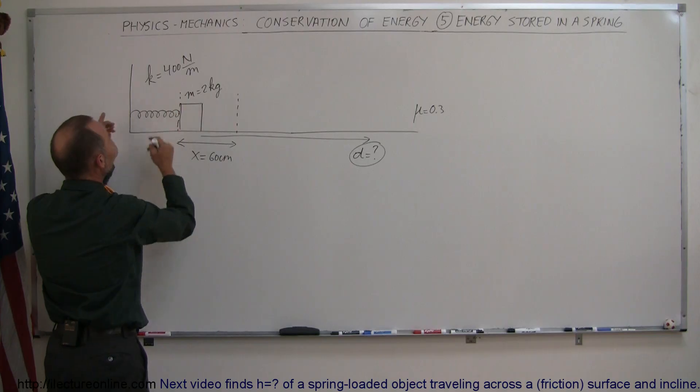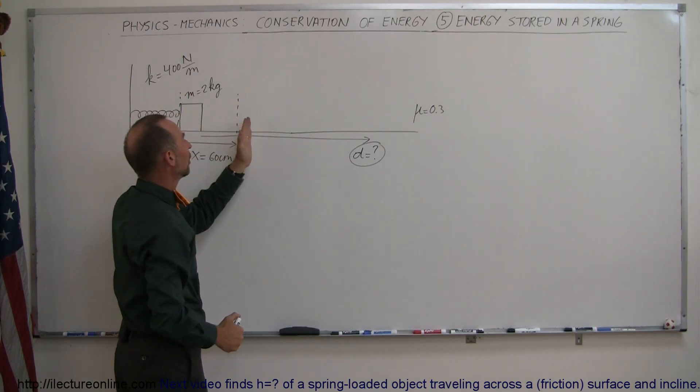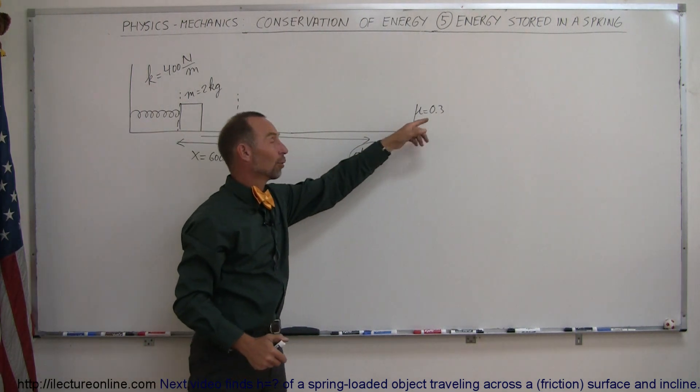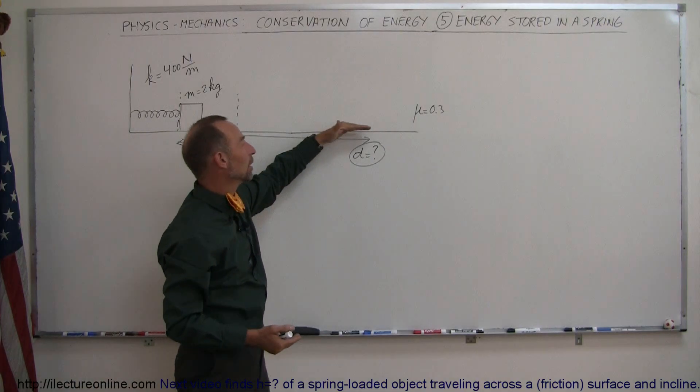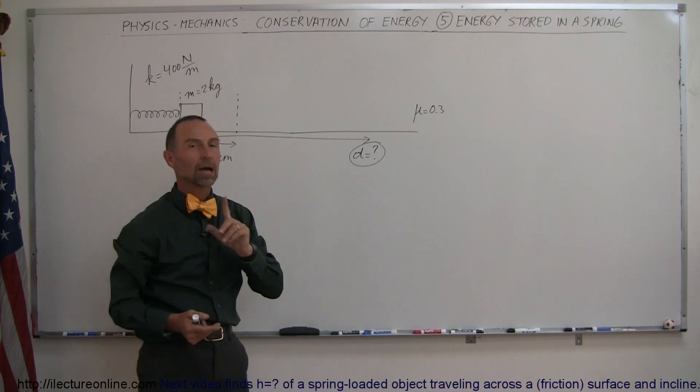All the energy stored in the spring will then be used to accelerate and move the block outward. Eventually, since there's friction between the block and the ground, the energy will be lost and the block will come to a stop. The question is, how far did the block go?